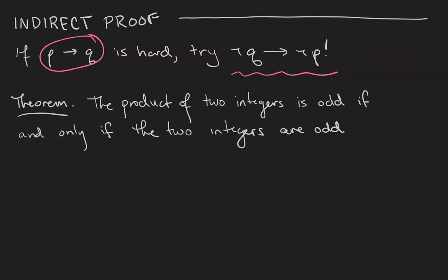Now let's prove the theorem: the product of two integers is odd if and only if the two integers themselves are odd. Let's look at this 'if and only if' — it's a biconditional. A biconditional is equivalent to an arrow going in the forward direction and an arrow going in the converse direction.